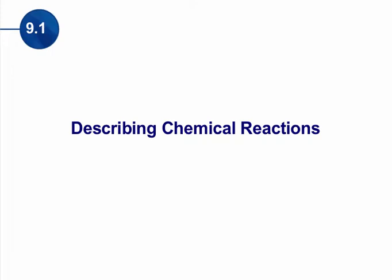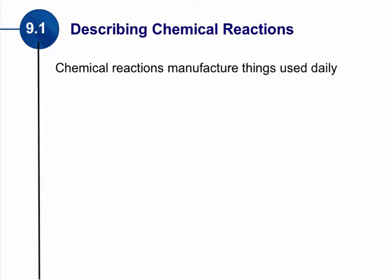Let's look at describing chemical reactions. Being able to give a good description of a chemical reaction is very important in chemistry because chemical reactions are used to manufacture daily things. Things we use every single day are often the result of a chemical reaction — things such as plastics, metals, medicine, fabric. Chances are it is a chemical reaction that has resulted in that product.